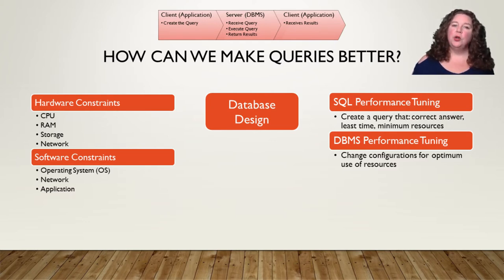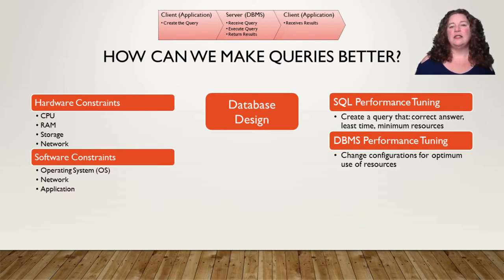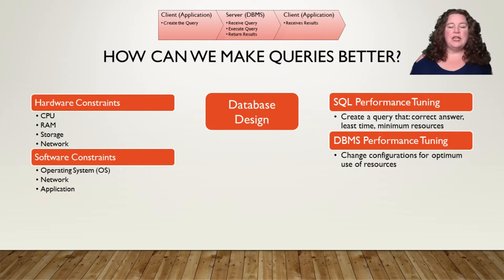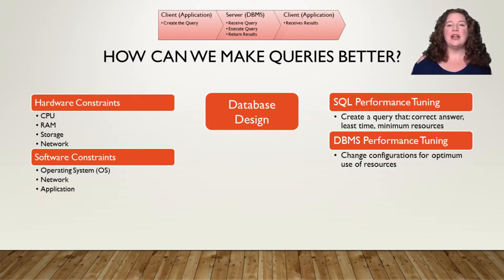Software constraints include the basic OS, the network connection, and the application itself. A lot of times the biggest problem with our databases is not the database itself but how the application uses it — how it gets its queries and its data. In the middle we have database design, which is the most important step. Inside database design we can do SQL performance tuning, making sure your query gives the correct answer with the least time and minimum resources, and DBMS performance tuning, which changes configurations of your DBMS.